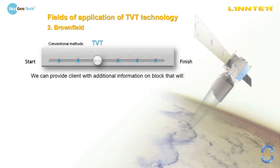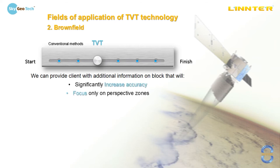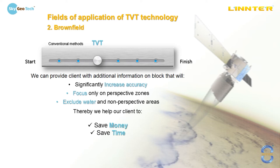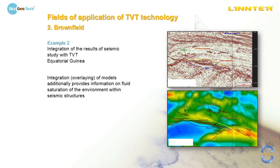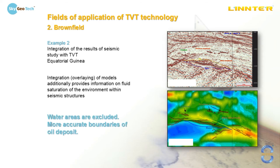The second field of application of TVT technology is brownfield, when conventional methods such as seismic survey are already used. TVT exploration can give additional information that will increase accuracy, focus only on perspective zones and exclude water areas, thereby helping to save money and time. Example: integration of the results of seismic study with TVT information in Equatorial Guinea. The first picture shows results of seismic exploration and the second is a TVT image with main lines of the structure overlaid. We can see strong correlation between these two. TVT technology helps to exclude water areas and build deposit boundaries more accurately.